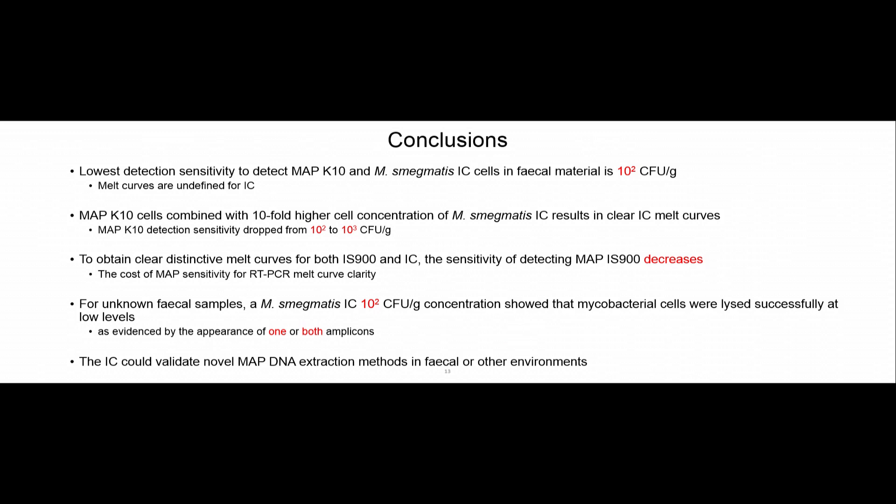The conclusions are: detection sensitivity in fecal material is 10 to the 2 for both internal control and MAP K10. However, this comes at the cost of undefined melting curve peaks. If we use a tenfold higher concentration for internal control, the sensitivity for MAP drops, but the melt curves are more defined. For unknown samples, the best concentration to add is 10 to the 2. Finally, this internal control could validate novel MAP DNA extraction methods in fecal material or other environments such as blood or milk.